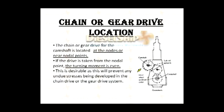Now let's see where the chain or gear drive is located. The Sulzer engines have the gear drive and MAN B&W have the chain drive. Both drives — chain or gear — should be located at the nodes or near-nodal points, not at the antinodes. If the drive is taken from the nodal point, the turning moment is even and there are no undue stresses on the drive gears. This is the pictorial representation of the MAN B&W chain system and the Sulzer gear drive system.